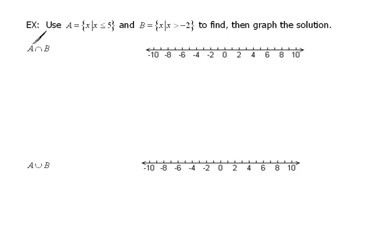First of all, they said they want A intersected with B. Well, let's look at set A first on a number line. It'll make it a little bit easier here. So if we're talking about the x's that are less than or equal to 5, 5 would be right about here on our number line.